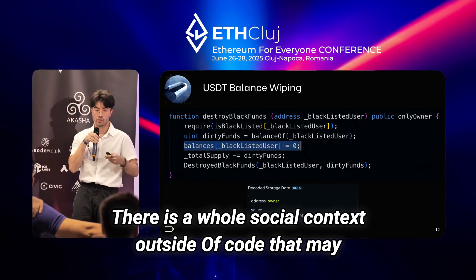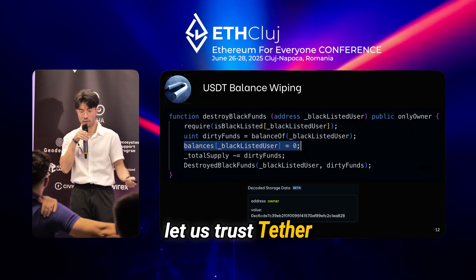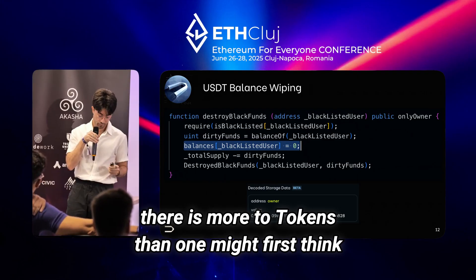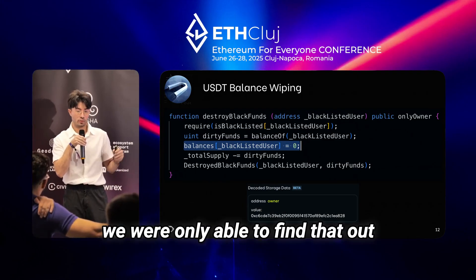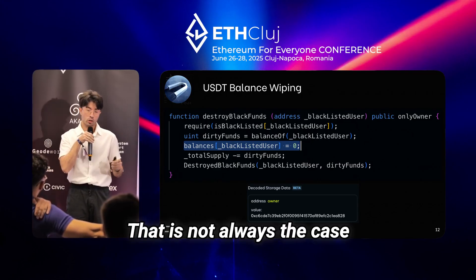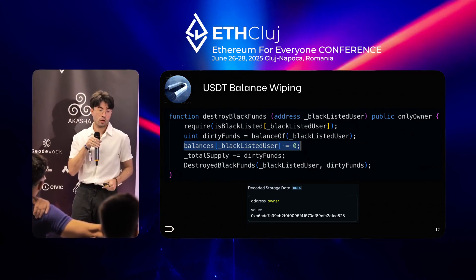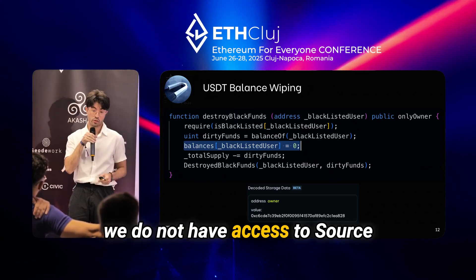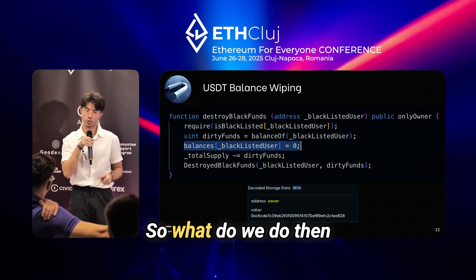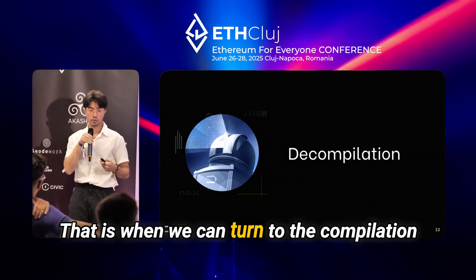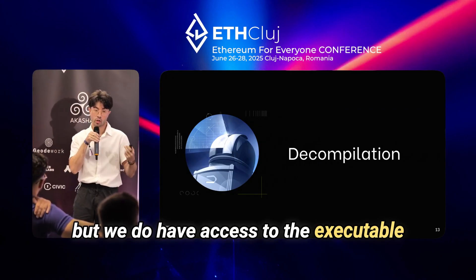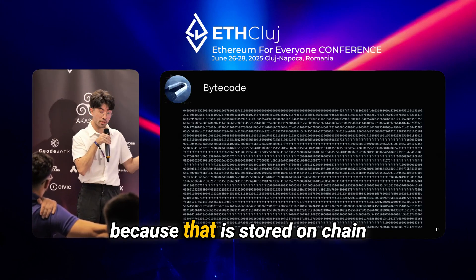There is a whole social context outside of code that may let us trust Tether and trade USDT. But the point is that there is more to tokens than one might first think. We were only able to find that out because we have access to the source code of USDT as provided by its deployers — and that is not always the case. When a token is first deployed, more often than not we do not have access to source, and coincidentally that is also when it sees most of its action. That is when we can turn to decompilation. We might not have access to the source code, but we do have access to the executable in the form of EVM bytecode, because that is stored on chain.